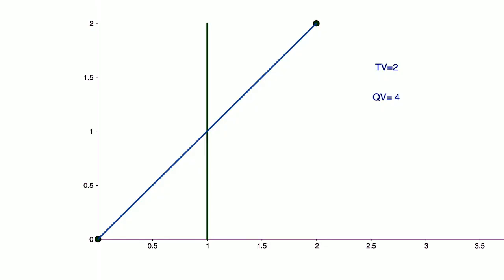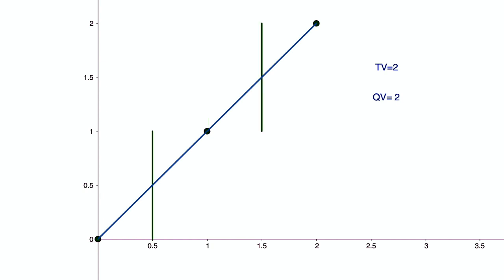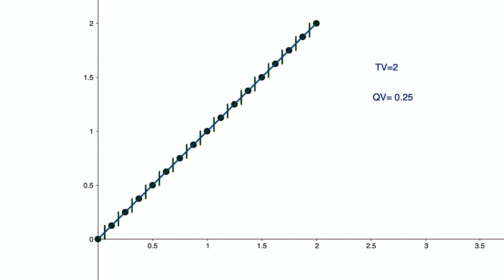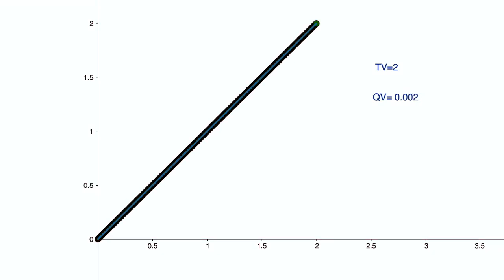We will now illustrate the calculation of the total and quadratic variation of this function visually. We draw the function over the given interval. We then measure the distance between the start and end values of the function. Notice the total variation is 2, as expected. We then divide the interval into two sub-intervals and measure the deviations in each sub-interval. The sum of the absolute values of these deviations is the total variation, and the sum of their squares is the quadratic variation. As this function is monotonically increasing, the total variation is not affected as we increase the number of sub-intervals. However, the quadratic variation decreases until it becomes 0.